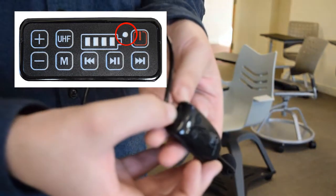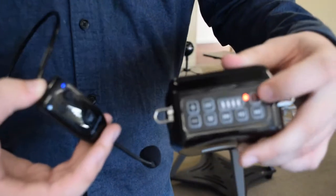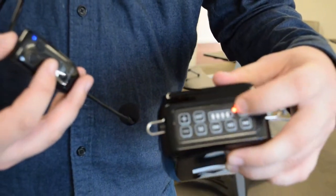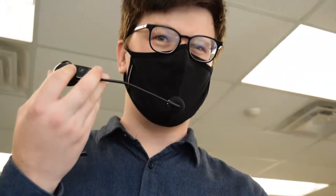Now hold down the pair button on the back of the microphone. You'll know it is paired when this light becomes solid. We can now talk into the microphone to confirm that our voice is amplified.